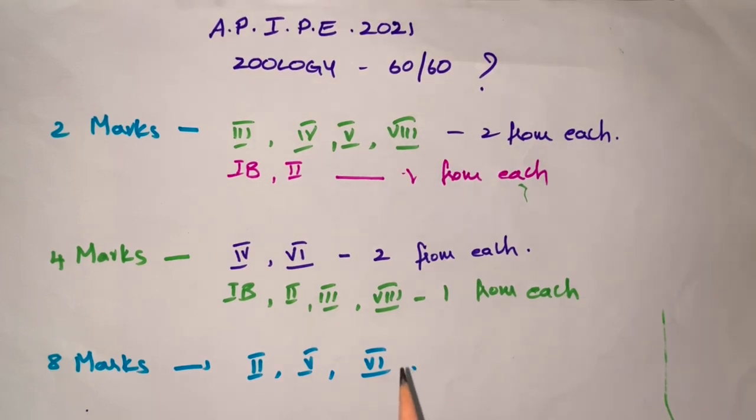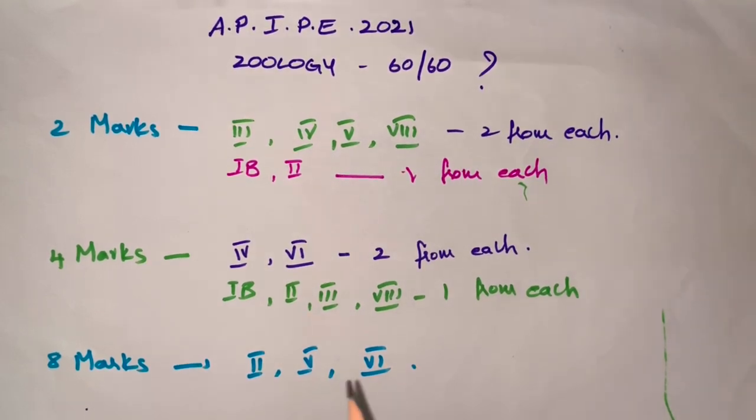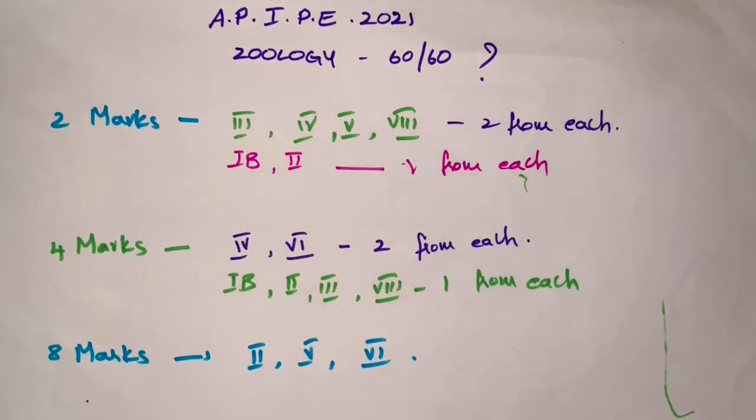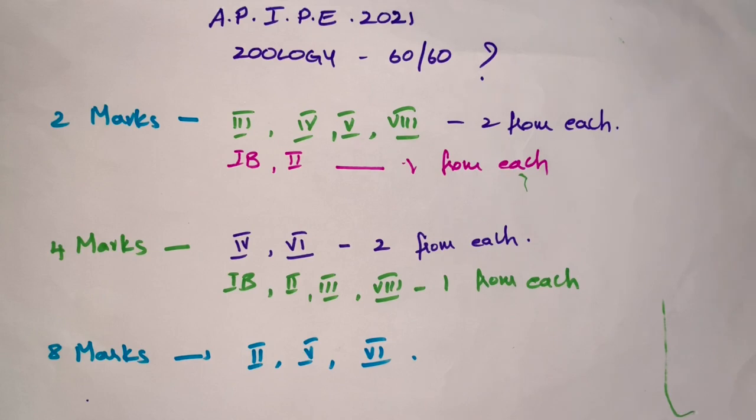So the bonus tip for today's video is: some people who are not aiming for 60 out of 60 can easily get 30 to 40 marks. If they want 30 marks, they can read only two chapters—the second chapter and the sixth chapter. If they are thorough with these two chapters, they can easily get 30 marks.